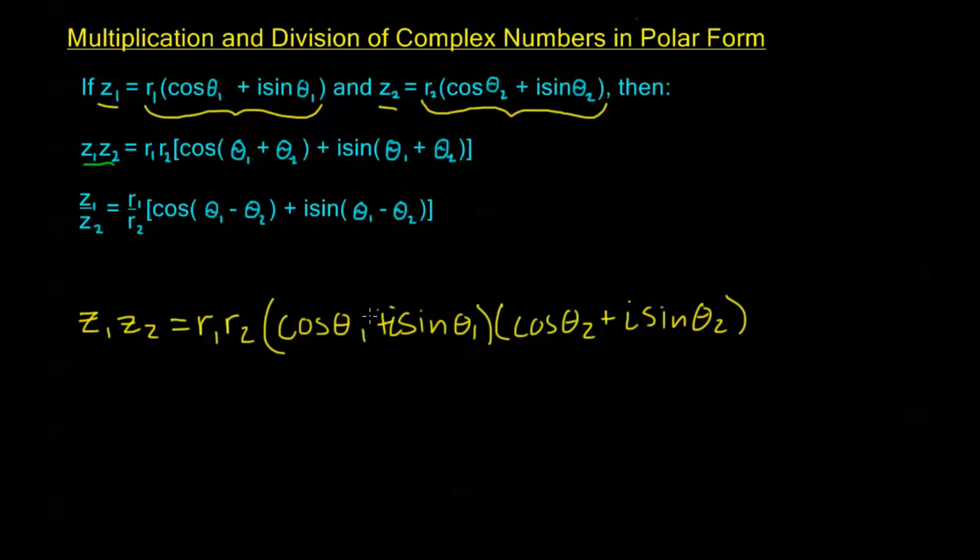Now I can foil this out and I get r₁r₂ times cos θ₁ cos θ₂. And I have i sin θ₁ times i sin θ₂, so I'm going to have i², and we know i² equals negative 1, so this is minus sin θ₁ sin θ₂.